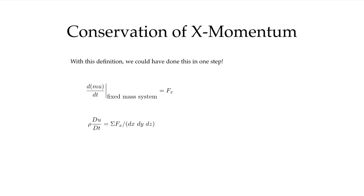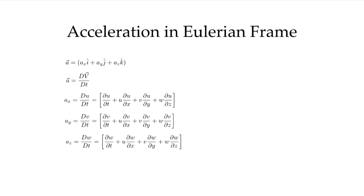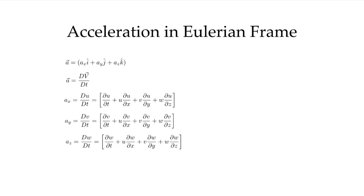We could have shortened this derivation by immediately converting using the material derivative: starting from a fixed-mass system time derivative and converting to an Eulerian system by replacing it with the material derivative. Because the mass is constant, we can move it in and out of the derivative operator. The acceleration in the Eulerian frame has not just time components but also spatial components. So even in a steady flow when time derivatives are all zero, the acceleration does not have to be zero — all of those spatial terms also have to be zero to have no inertia force.